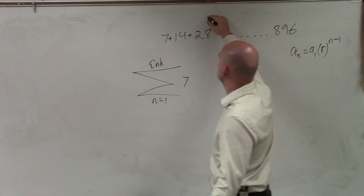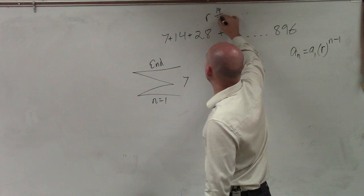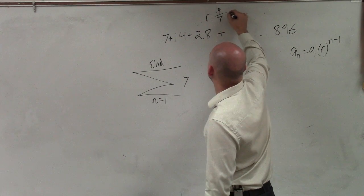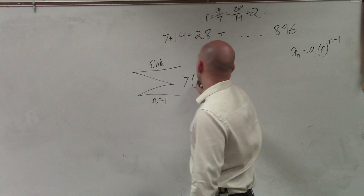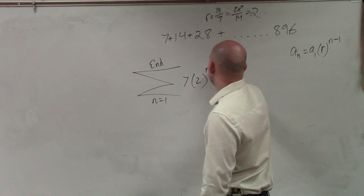Do we know what r is? Well, to find r, just take 14 divided by 7, which has to be equal to 28 over 14, which is equal to 2. And then to the n minus 1.